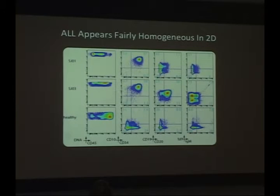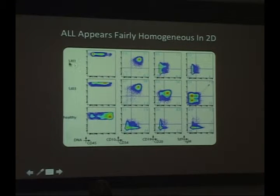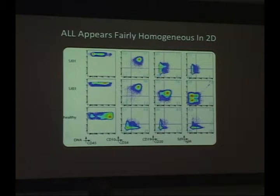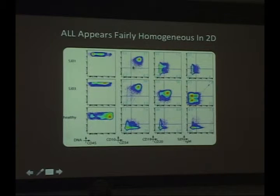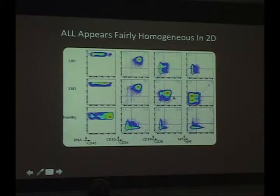If you look at leukemia in 2D plots from a clinical flow lab, leukemia samples can look very homogeneous. The top two rows are two different leukemia samples compared to a healthy normal bone marrow. Normally you'd gate blasts based on CD45-by-scatter; here we use CD45-by-DNA. The leukemia samples have lower CD45 typical of blasts, with fairly homogeneous high CD10 and CD34. There's some heterogeneity in other markers of B-cell development like CD19, CD20, TDT, and IgM, suggesting these are immature B-cells compared to the normal.